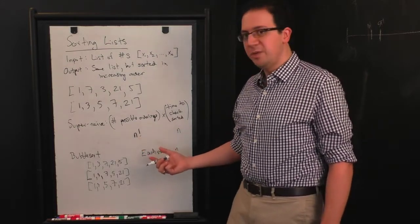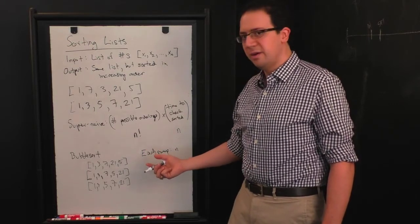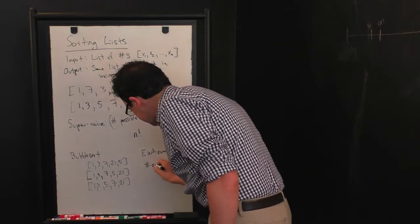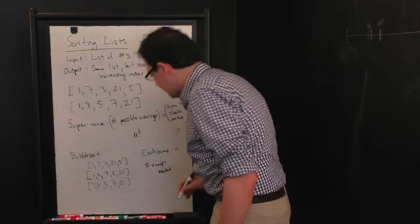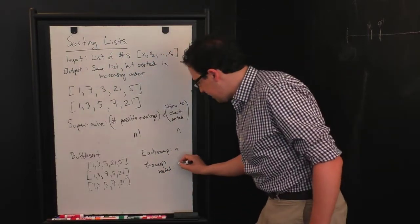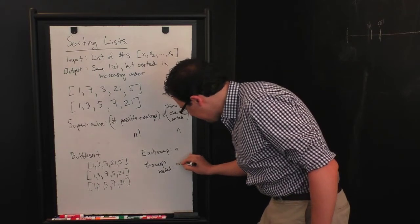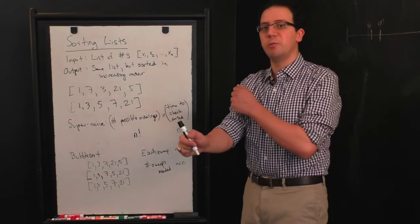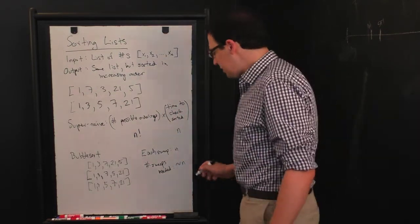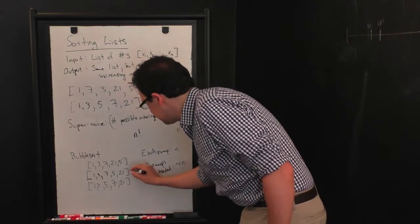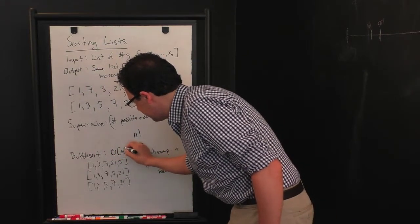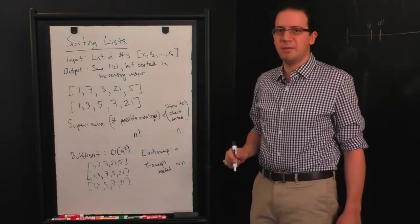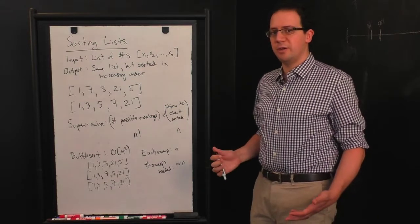Okay, so each sweep is n steps. And the question is, how many sweeps do we need to do to be sure that we've gotten everything in order? And the answer there, number of sweeps needed, is in the worst case, you will actually need essentially n sweeps. And you can see this by looking at the example of a list that's perfectly reversed. So the total time for bubble sort is going to be order n squared. Okay, so n squared, as we saw, is a lot better than n factorial.